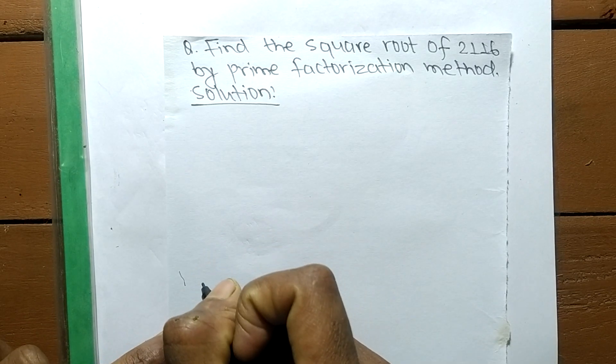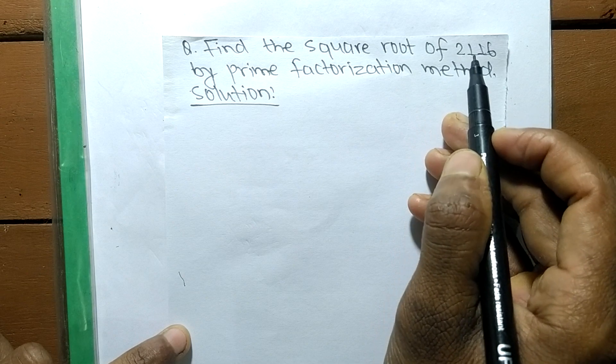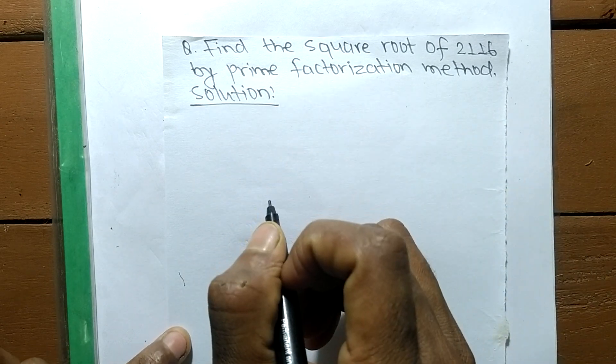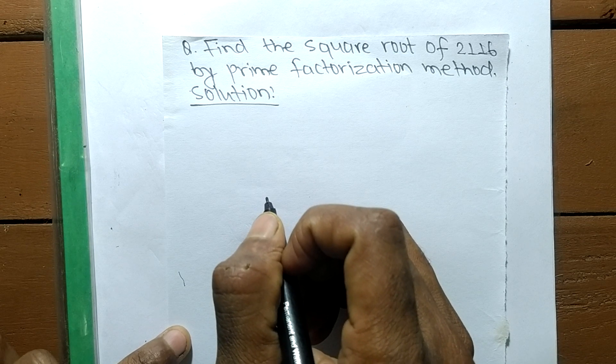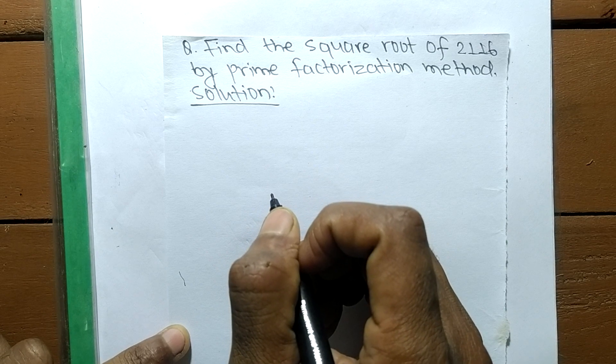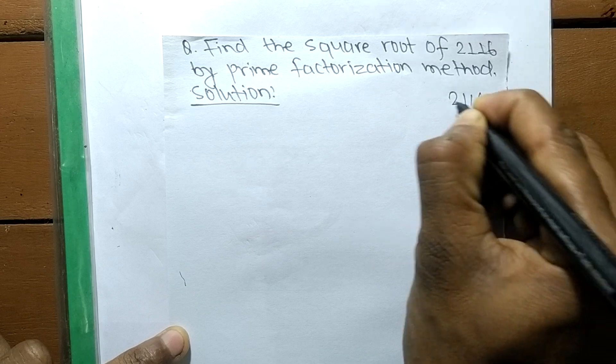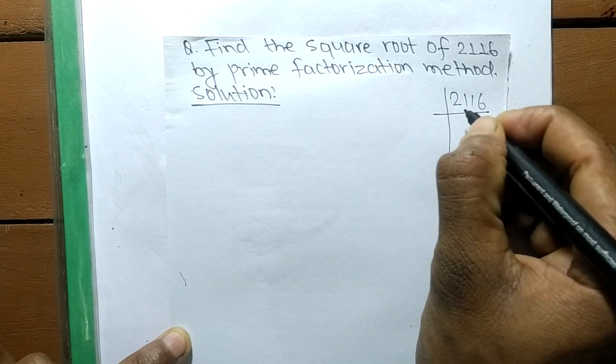Today in this video we shall learn to find the square root of 2116 by prime factorization method. To find a square root by prime factorization method, first we have to find the prime factors of the given number. The given number is 2116, so now we have to find the prime factors of 2116.